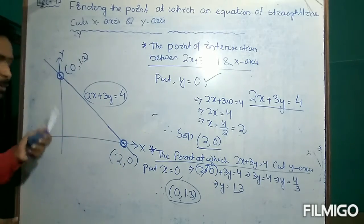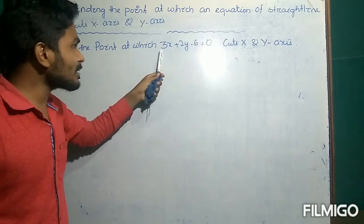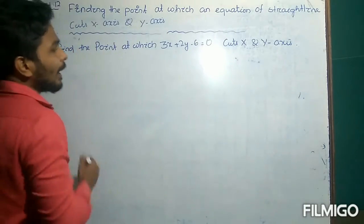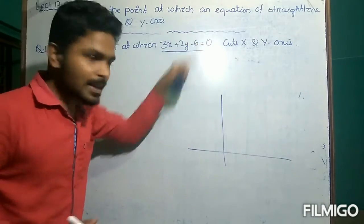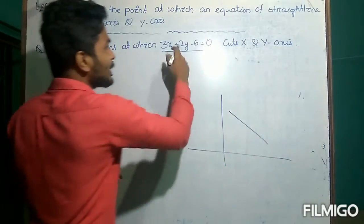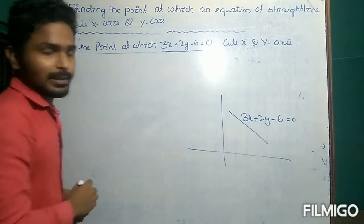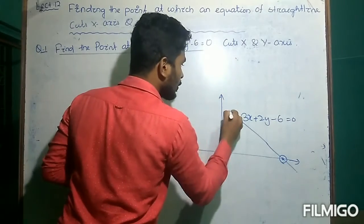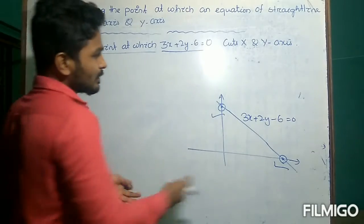Now let's do a question. Find the point at which the equation 3x plus 2y minus 6 equals 0 cuts the x-axis and y-axis. This equation represents a straight line, and we have to find the coordinates of the two points where this line cuts the x-axis and y-axis.